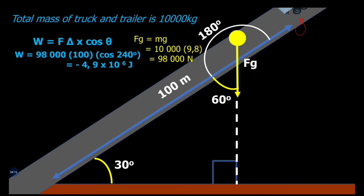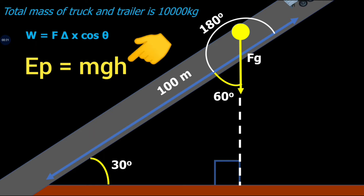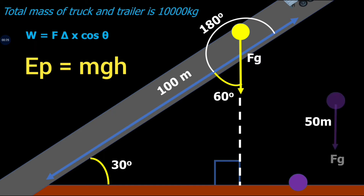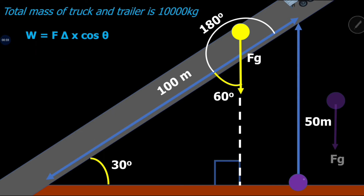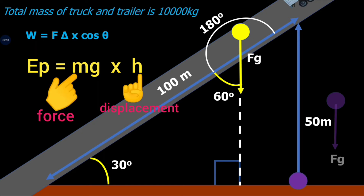Method three uses the potential energy formula EP = mgh. This formula is used to calculate the potential energy of an object above the earth's surface, where h represents the vertical displacement. We imagine the truck moving vertically upwards from the reference point. The potential energy formula is actually a work formula — force times displacement — and the truck covers a vertical displacement of 50 meters upwards.